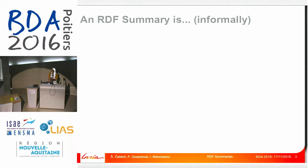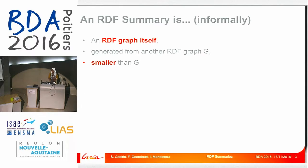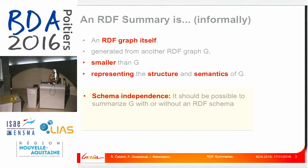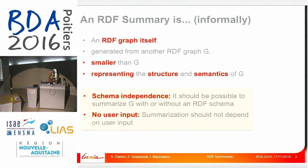Informally, an RDF summary is also an RDF graph generated from an input RDF graph G. Hopefully it is much smaller than G — it is compact. It represents the structure and semantics of G; here we discuss semantic RDF graphs. It should be possible to summarize G with or without an RDF schema, which we will introduce later. And we require zero user input — we assume the user has no idea what is going on and our approach should not depend on any user input.